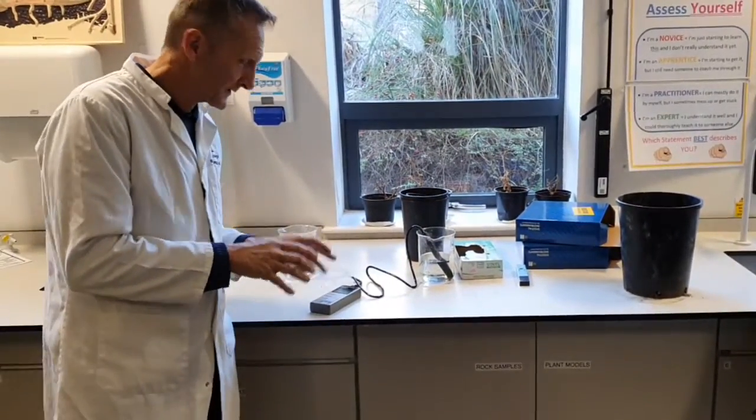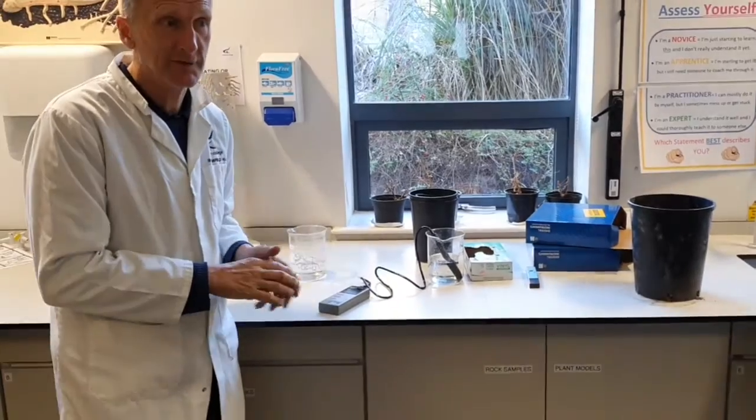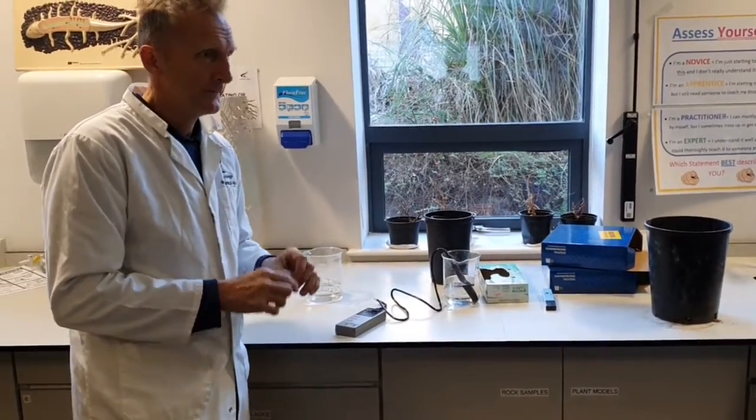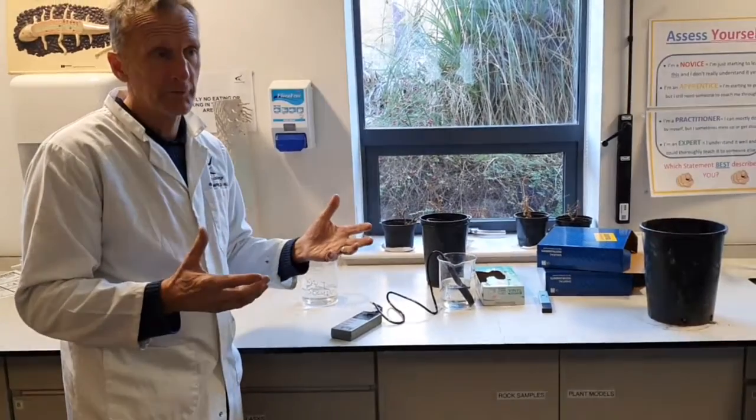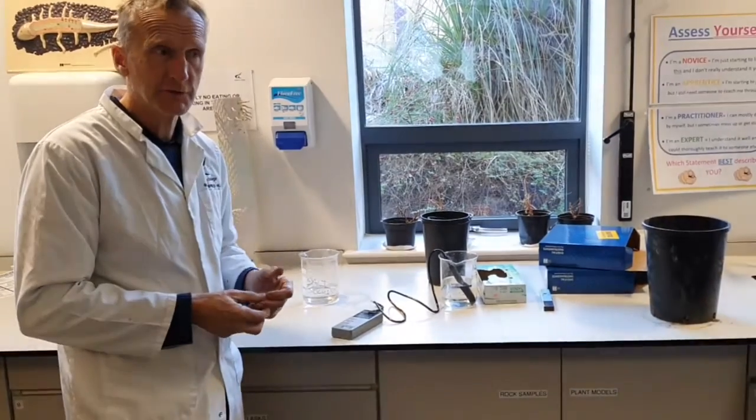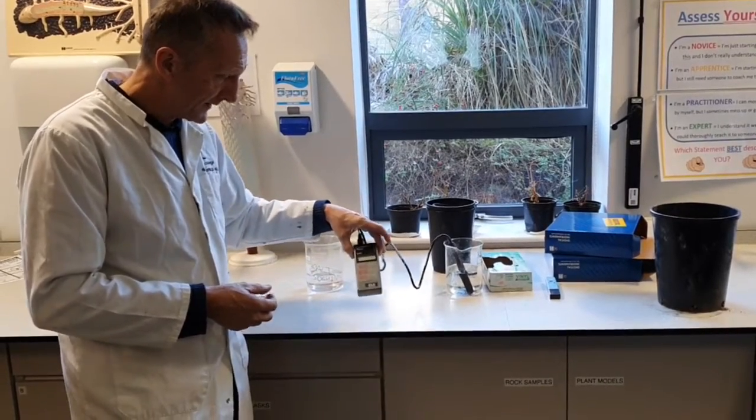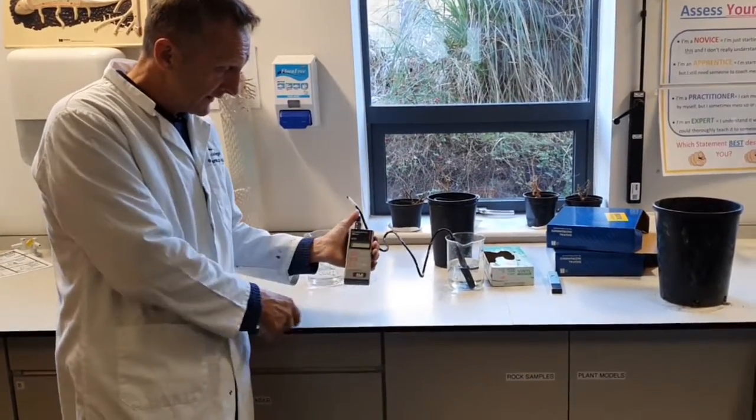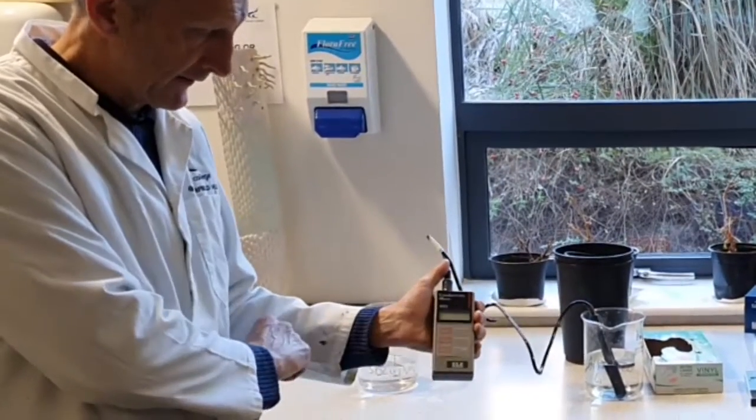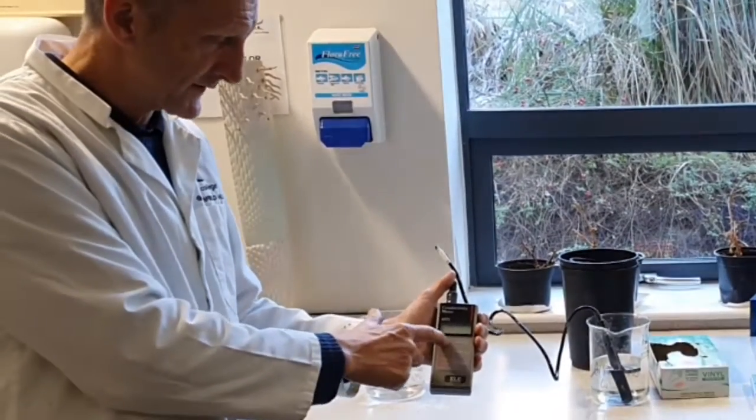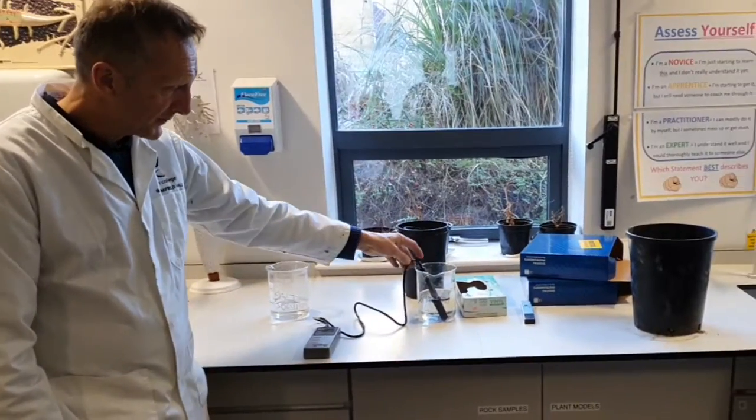We're going to look at soil conductivity, or EC as you might see it in a table. Conductivity is measured in microsiemens and we have an instrument like this. You've got the on button at the top and the off button there. All you've got to do is press the on button.